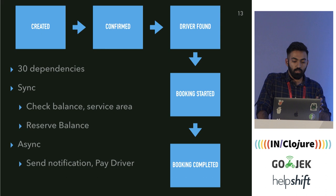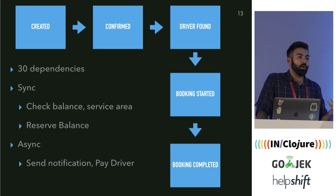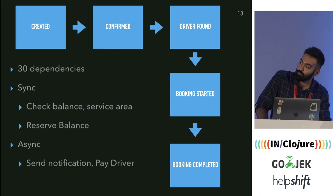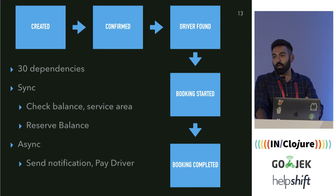Throughout this flow, there were around 30 dependencies. Sync calls included 'check balance' and 'check for service area' — called when the booking is created, since you can't find out about insufficient balance asynchronously. We also check balance in GoPay, our own wallet service. Async calls include send notification, paying the driver, and charging the customer — these don't need to happen synchronously and can happen sometime later.